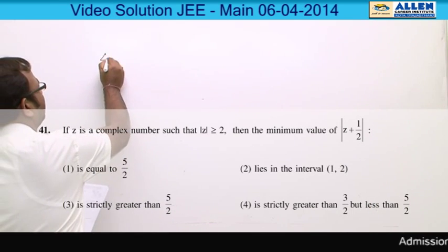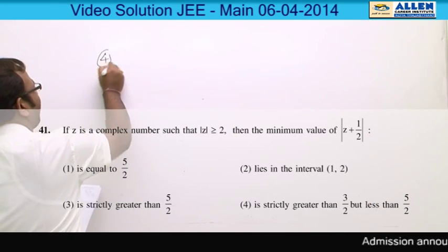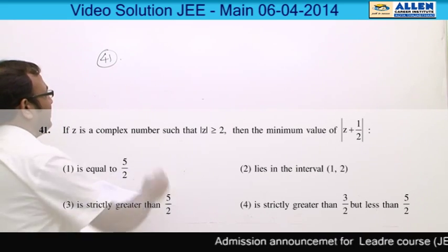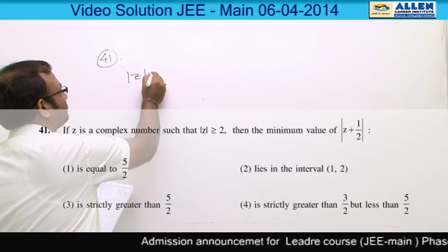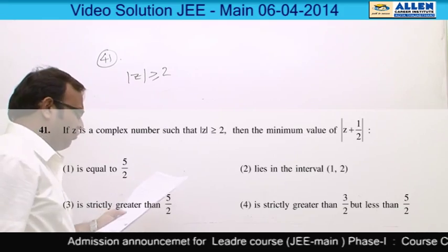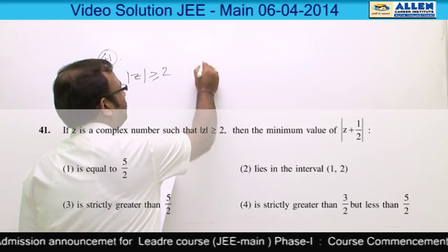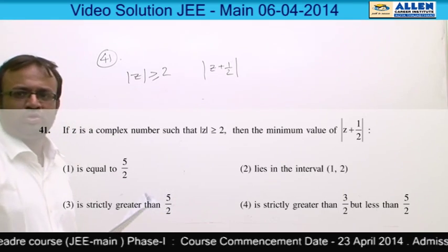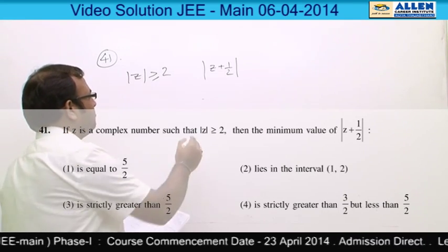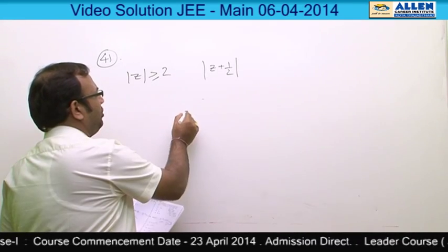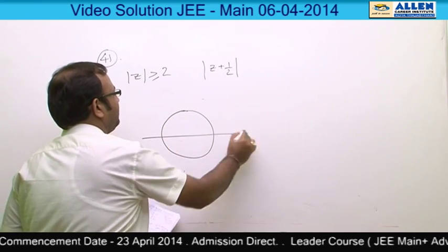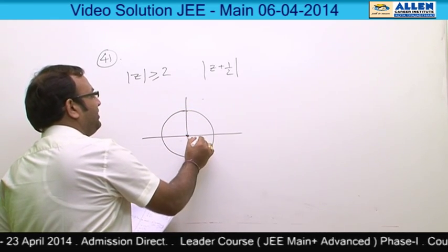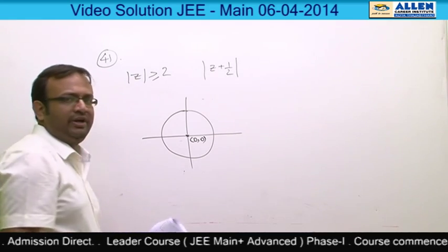We will discuss question number 41. In this question, it is given that |z| ≥ 2 and we have to find the minimum value of |z + 1/2|. If we look at the problem geometrically, |z| ≥ 2 represents the exterior of the circle whose center is at (0, 0) and whose radius is 2.